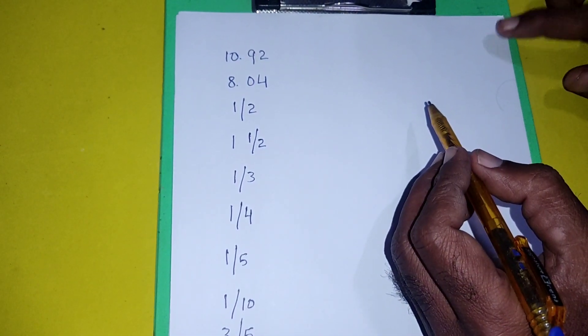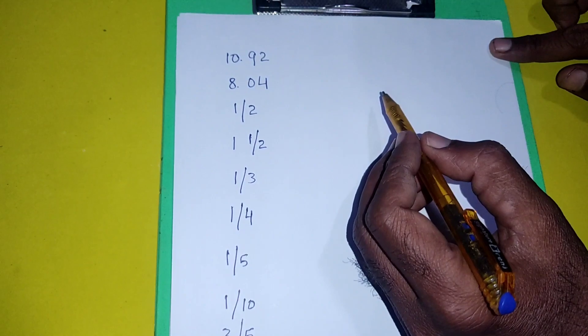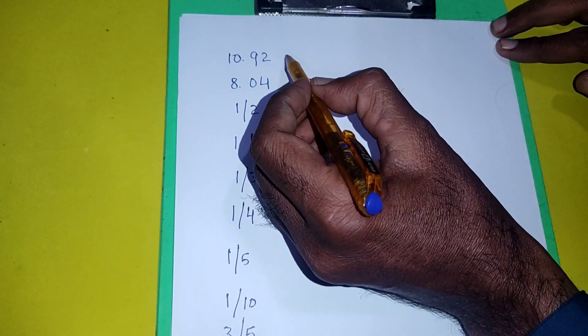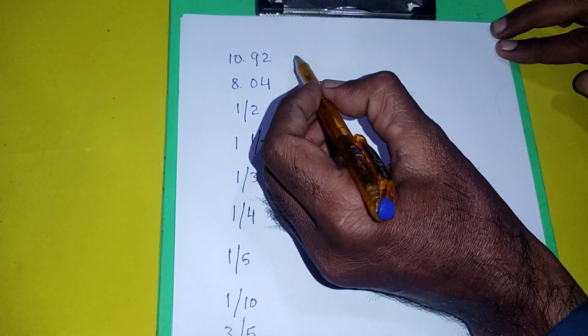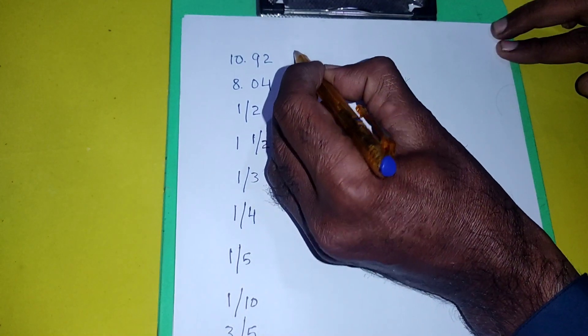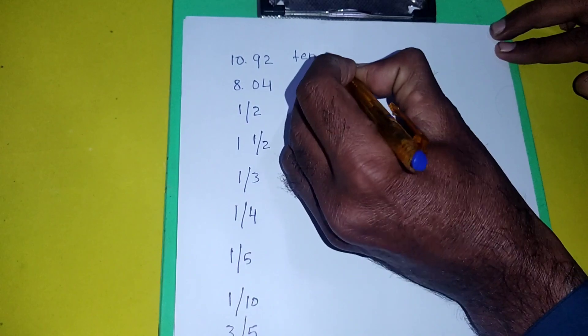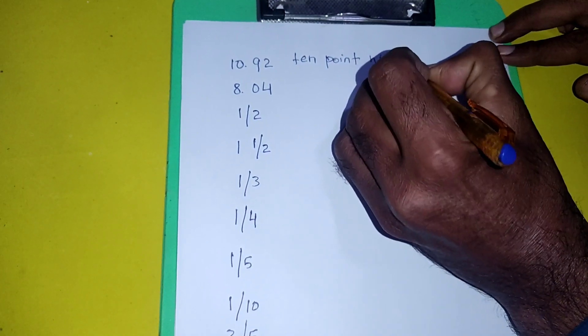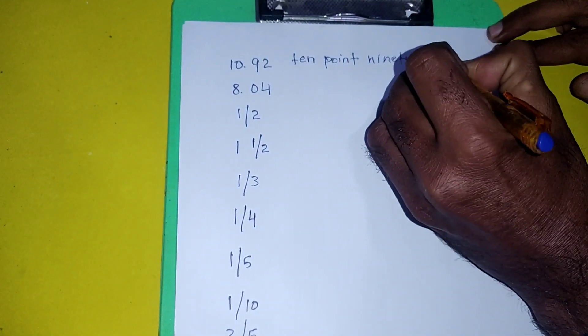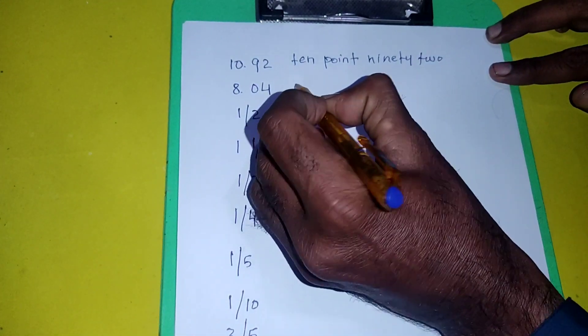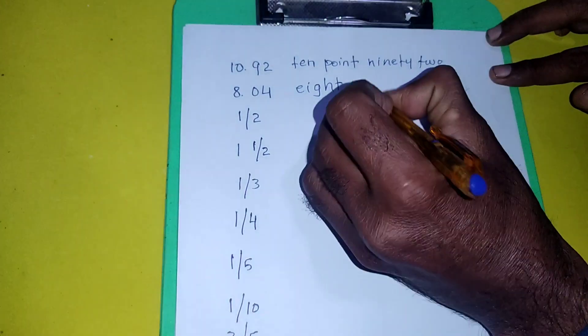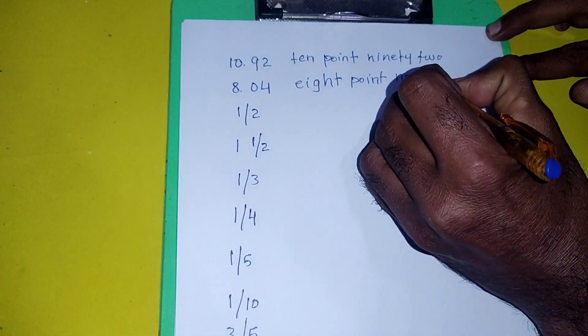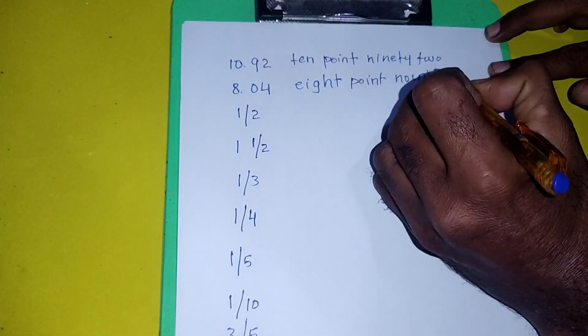Hi there, welcome to your favorite channel. Today we are going to learn maths in English. We could write or say this number: ten point ninety two, ten point ninety two. Eight point oh four, eight point oh four.